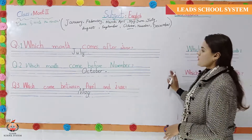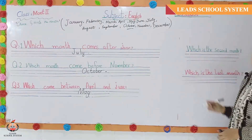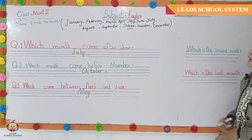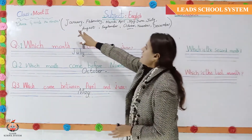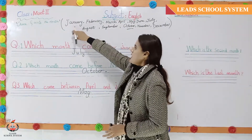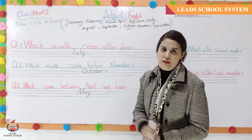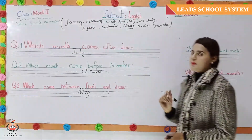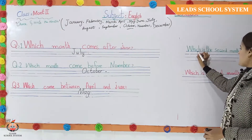Fourth question ہم سے پوچھا جا رہا ہے: which is the second month? آپ یہاں سے دیکھیں گے کہ first one تو ہے January، تو second one کیا ہوا؟ February. تو آپ یہاں پر February لکھ دیں گے۔